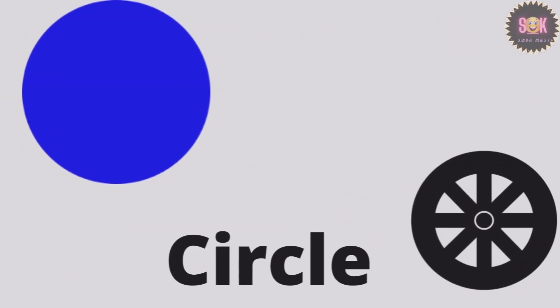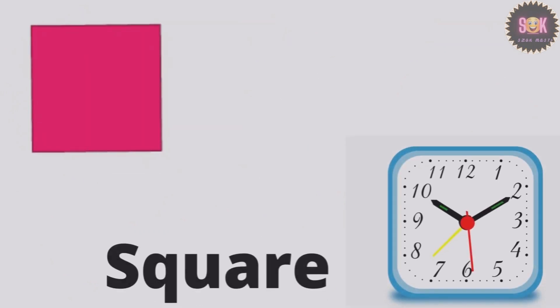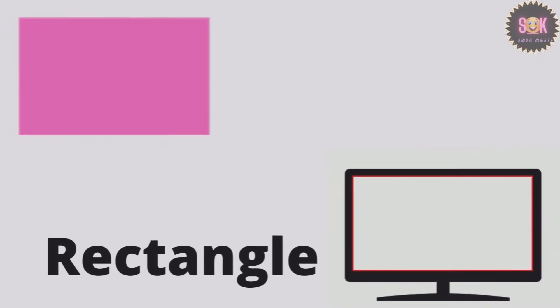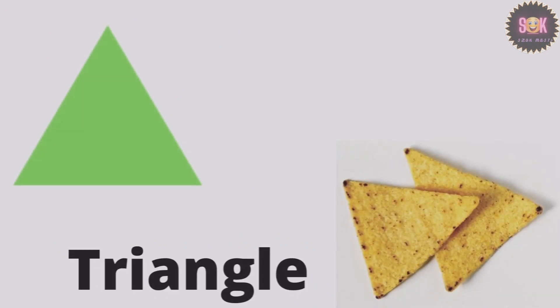This is a circle shape. This is a square shape. This is a rectangle shape. This is a triangle shape.